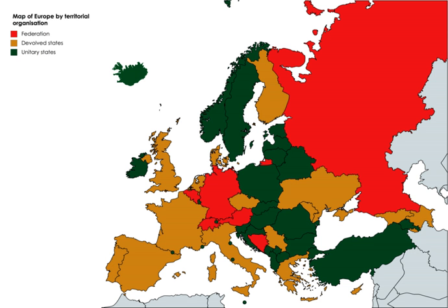Anarchists are against the state but are not against political organization or governance, so long as it is self-governance utilizing direct democracy. The mode of political organization preferred by anarchists is federalism or confederalism. However, the anarchist definition of federalism tends to differ from the definition assumed by pro-state political scientists. The social and political structure of anarchy is based on a voluntary federation of decentralized, directly democratic policy-making bodies — the neighborhood and community assemblies and their confederations.